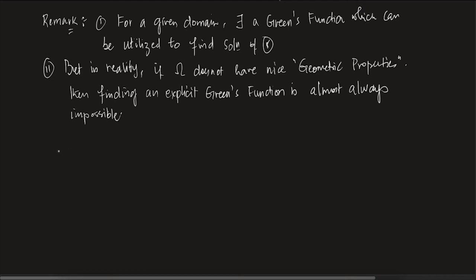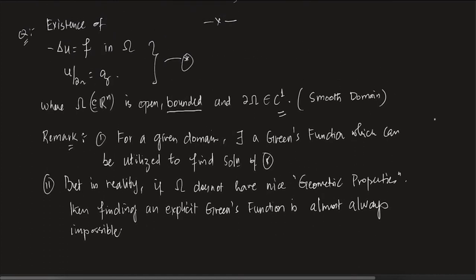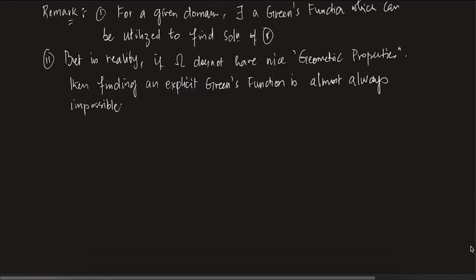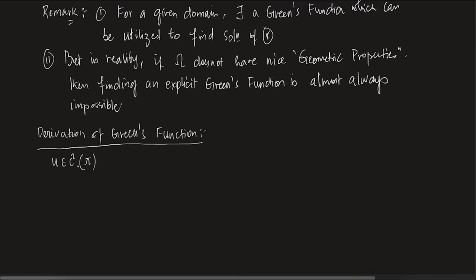Let us first show that there is a Green's function that solves our problem — call it problem star. We want to find U(x). Now, the derivation of the Green's function begins. We start with a U in C2(omega bar) — this is just an arbitrary function, nothing special.